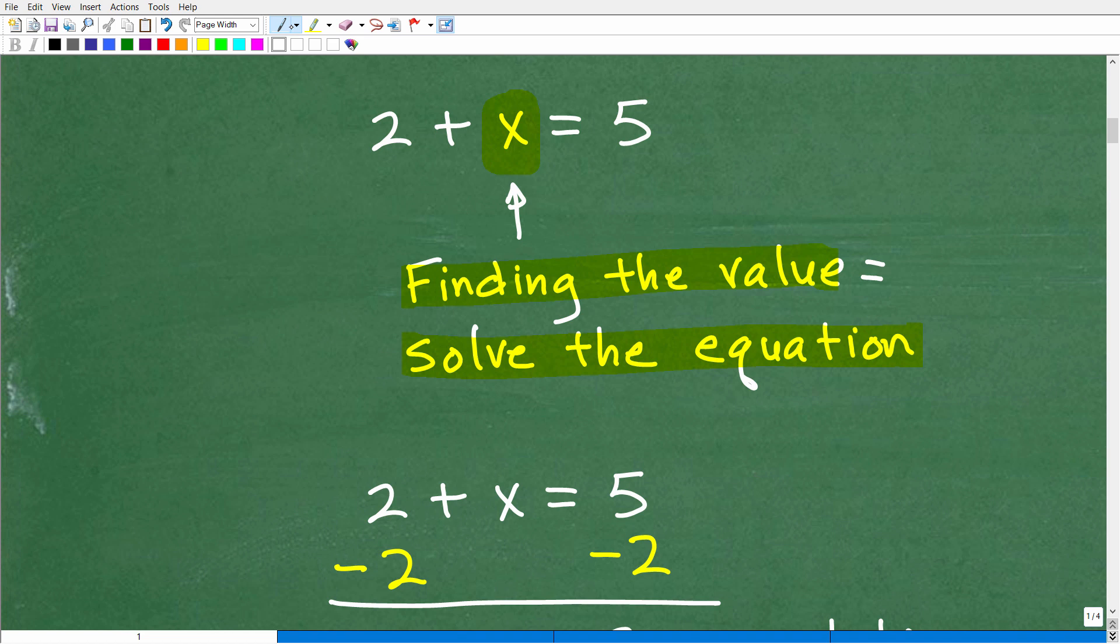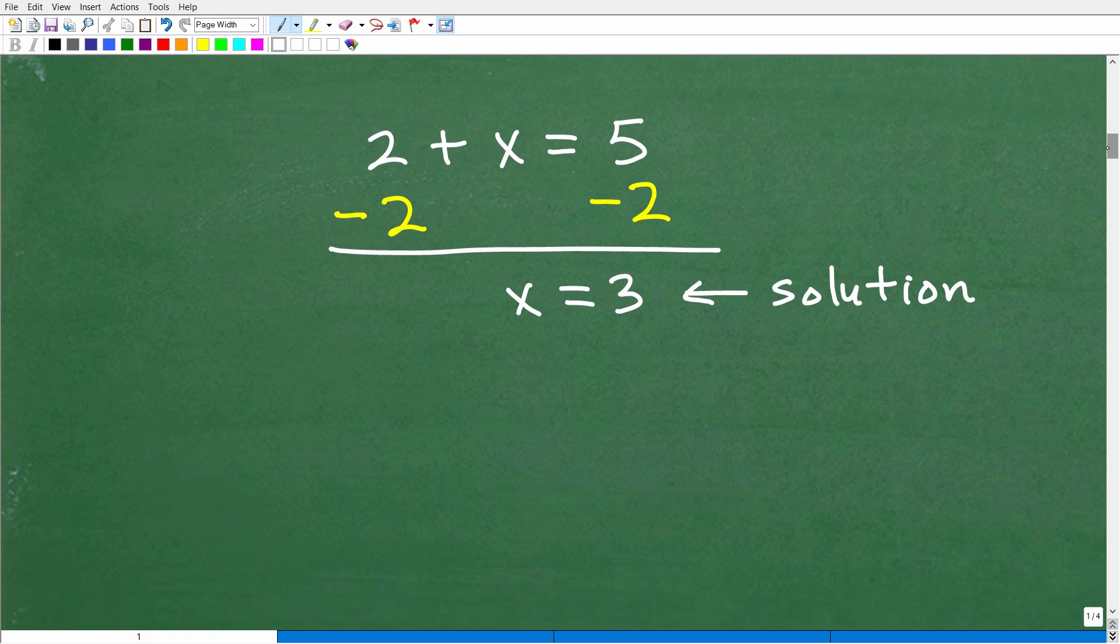Now, way back in the first and second grade, we could just kind of use our fingers and think about it for a second, and you do some mental math that we could get the answer. But we need a more formal structure to solve equations. So here's an example how to solve this particular equation in algebra. So here we have two plus x is equal to five. So in algebra, the proper way to solve for x, or to figure this out, is to subtract two from both sides of the equation. And then we're going to add down in a column manner. Two minus two is zero. X plus nothing is x. And five minus two is three. So x is equal to three. This is what we call the solution.